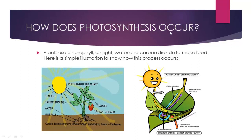Now, how does this process occur? Plants use chlorophyll, sunlight, water, and carbon dioxide to make food. Here you can see a diagram showing how this process occurs. Radiation from the Sun is captured by the light-capturing pigment present inside the leaves. Carbon dioxide comes from the air and enters the leaves through tiny holes called stomata. Water and minerals are absorbed from the soil through the roots. These are all combined and transformed into oxygen and plant sugars — that is glucose. Oxygen is liberated during this process, which is why plants give us fresh oxygen, and sugar is transported to various parts of the plant.